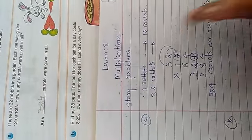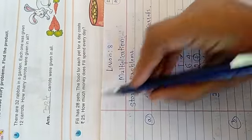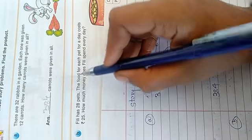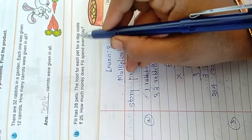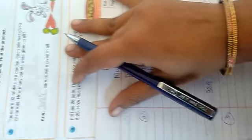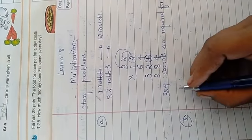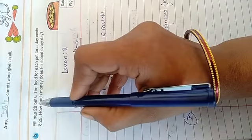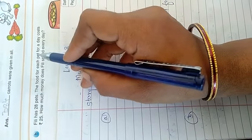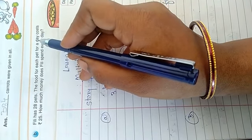What is the second one? Pilly has 28 pets. The food for each pet for a day cost 25 rupees. How much money does Pilly spend every day? See, how many pets she is having? 28 pets. For one pet, the one day cost for food is 25 rupees.